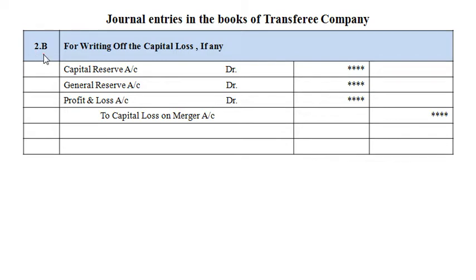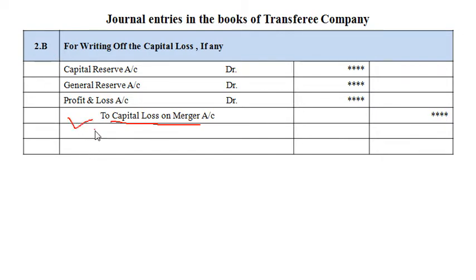Transaction 2B is for writing off the capital loss, if any, arising due to merger. The accounting entry is: Capital Reserve Account debit, General Reserve Account debit, Profit and Loss Account debit, to Capital Loss on Merger Account. Since Capital Loss on Merger Account was debited in entry 2A, it is now credited in entry 2B to close the account, and the loss is written off against the balances of capital reserve, general reserve and profit and loss account.